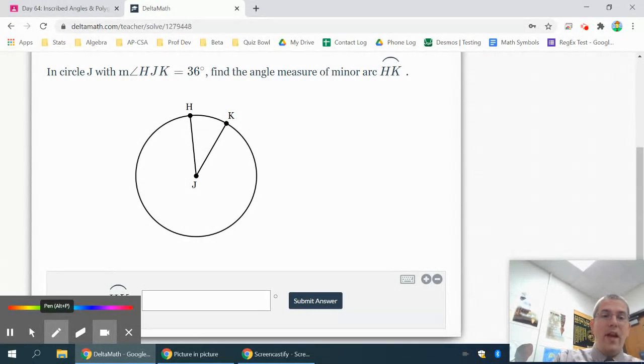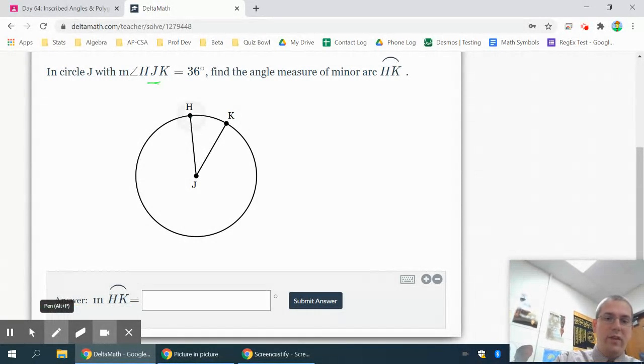But on this one you have H, J, K. Now the way they name an angle is the one in the middle is the vertex, so that's basically starting at H, then to J, then to K, and that draws your angle kind of looks like a pair of tweezers.